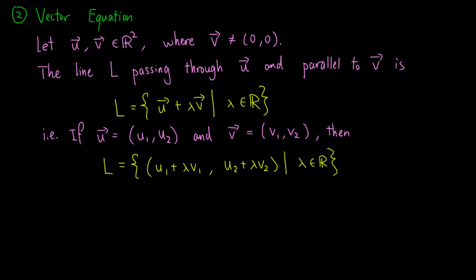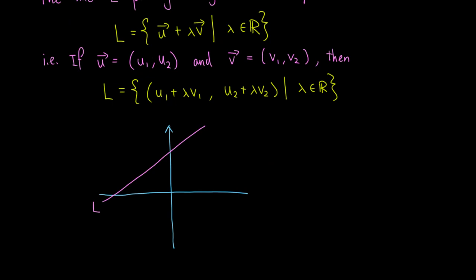To make sense of this definition, it is useful for us to draw the following diagram. Let's say we have a line L as shown. In this case, u is a point on the line L. In other words, the vector u has its tip on a point in L. We also know that v is a vector which is parallel to L, so v would look something like this.